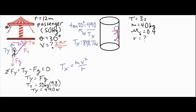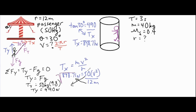Cross-multiplying, Tx = 490 divided by tangent of 30 degrees, which gives 848.71 newtons. Now I know Tx = 848.71 N equals mv squared over r. With mass = 50 kg and radius = 12 meters, I cross-multiply to get v squared = 848.71 × 12 / 50, then take the square root. The velocity comes out to 14.27 meters per second.